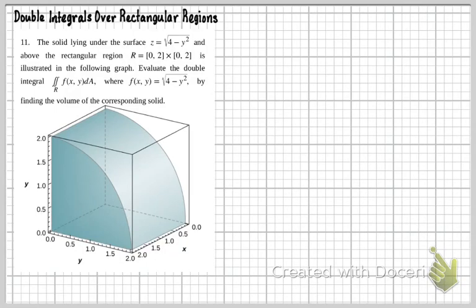The solid lying under the surface z equals square root of 4 minus y squared, and above the rectangular region R where x is between 0 and 2 and y is between 0 and 2, is illustrated in the following graph. Evaluate the double integral of f(x, y) over the region, where f(x, y) equals the square root of 4 minus y squared, by finding the volume of the corresponding solid.